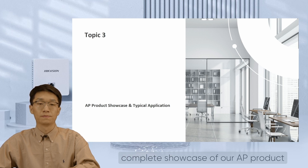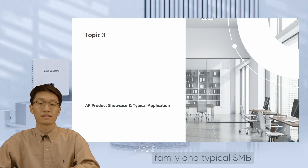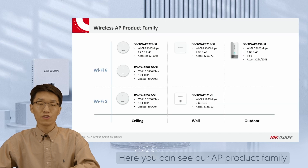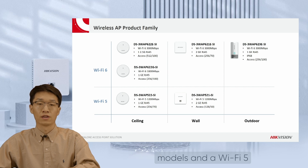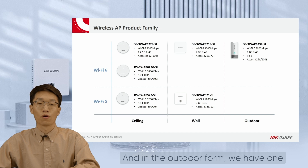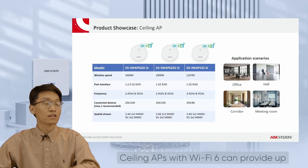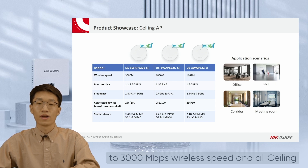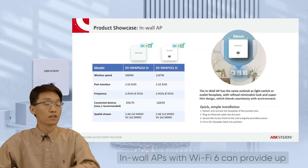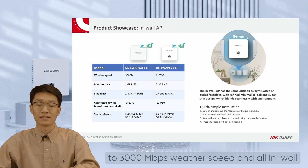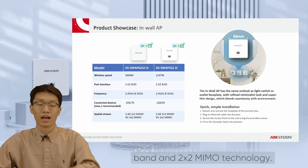In the last topic, I will give you a complete showcase of our AP product family and typical SMB scenarios for AP application. Our AP product family features three form factors and two Wi-Fi generations. In the ceiling form, we have two Wi-Fi 6 models and one Wi-Fi 5 model to meet different needs. In the wall form, we have one Wi-Fi 5 model and one Wi-Fi 6 model. In the outdoor form, we have one Wi-Fi 6 model with IP68 certification to meet outdoor environment standards. Ceiling APs with Wi-Fi 6 can provide up to 3000 Mbps wireless speed, and all ceiling APs support dual frequency band and 2x2 MIMO technology. They are suitable for use in offices, halls, corridors, and meeting rooms.